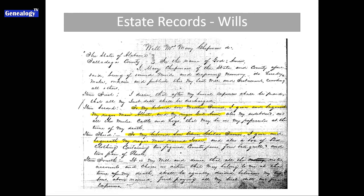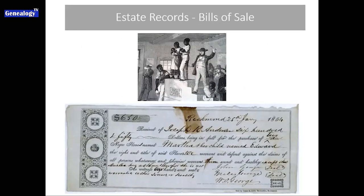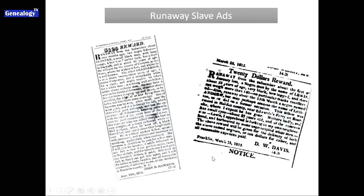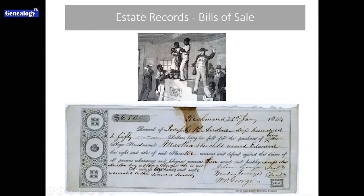Another thing you can find in estate records are bills of sale. You can find receipts for bills of sale. Here we have from Richmond, Virginia, an 1854 receipt for $650, where Joseph Anderson has purchased two Negro slaves named Martha and her child Edward. There's also some information about Martha: she's healthy except that she has asthma, and therefore she is not warranted as completely sound and healthy because of that.